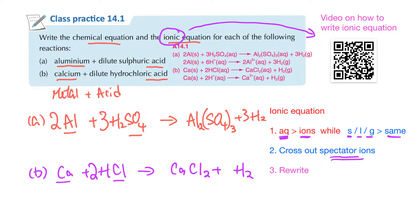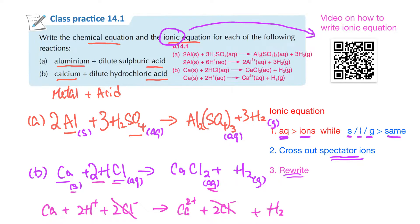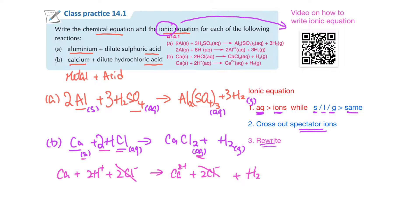Cross out the spectator ions and rewrite the whole equation. For example, the metal must be solid state, the acid is aqueous, the salt formed is an ionic compound so it's aqueous, and the gas formed is gas state. For part B: Ca is solid — don't change it. You have 2H⁺ and 2Cl⁻ (aqueous, separate into ions). The product is CaCl₂ (aqueous) and H₂ (gas). The Cl⁻ ions can be crossed out as spectator ions.